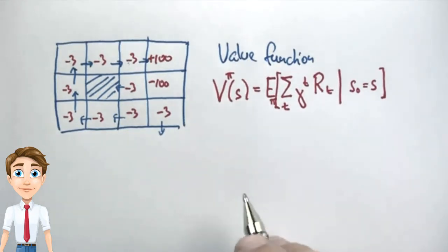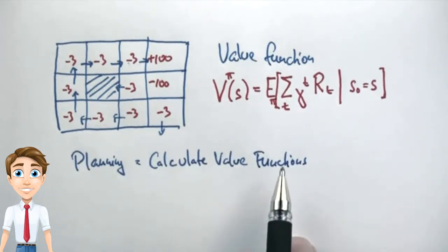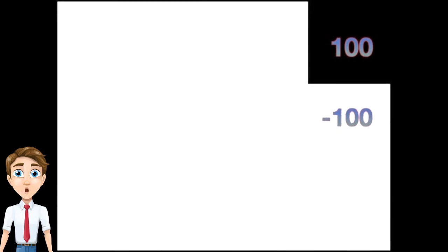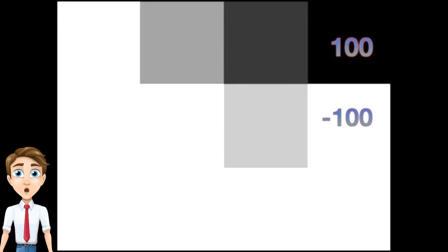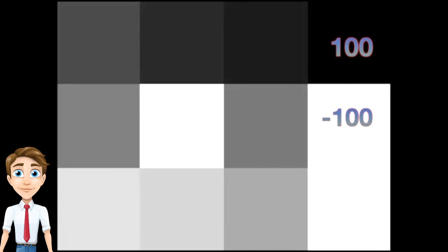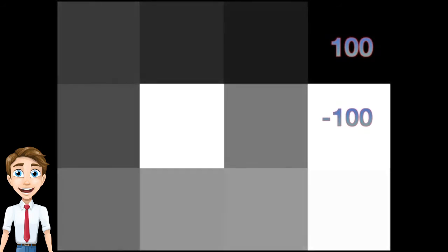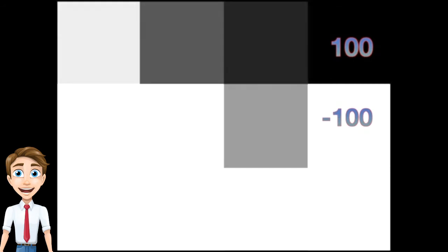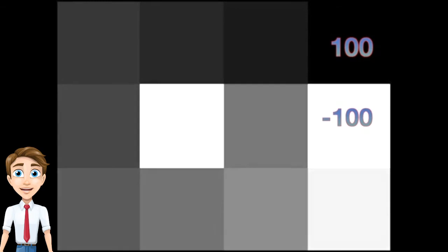The way we're going to plan is to iterate and compute value functions, and by doing this we'll find better and better policies. A value function is a potential function that leads from the goal location — in this case the 100 in the upper right — all the way into the space, so that hill climbing in this potential function leads you on the shortest path to the goal. The algorithm spreads value through the space recursively, and after a number of iterations it converges, giving a grayscale value that corresponds to the best way of getting to the goal. Think of it as pouring milk into the +100 state and having the milk descend through the maze; going in the gradient of the milk flow leads you to the goal optimally.